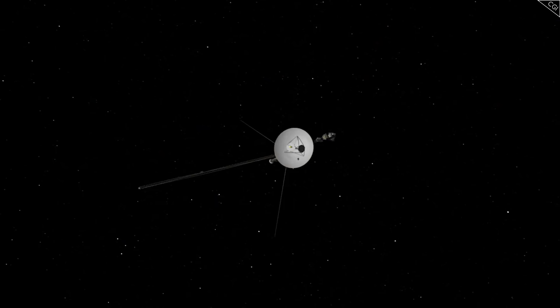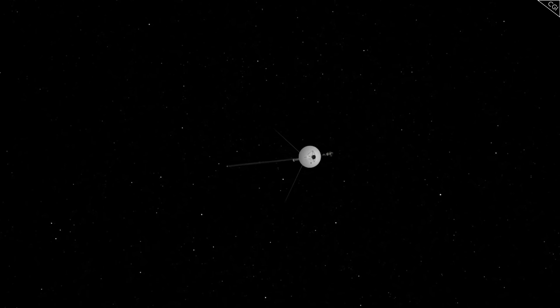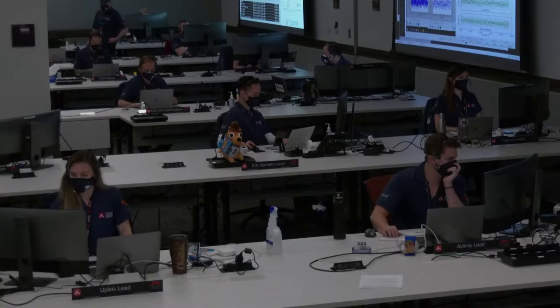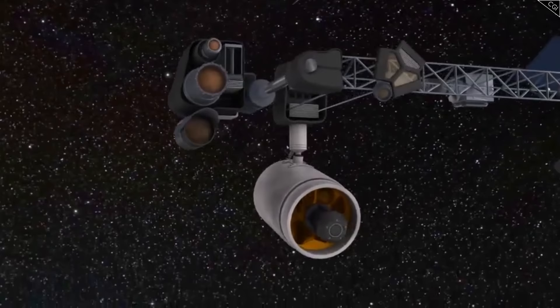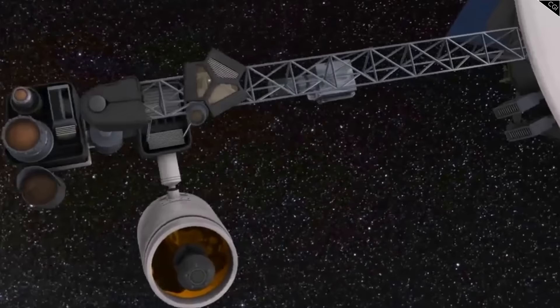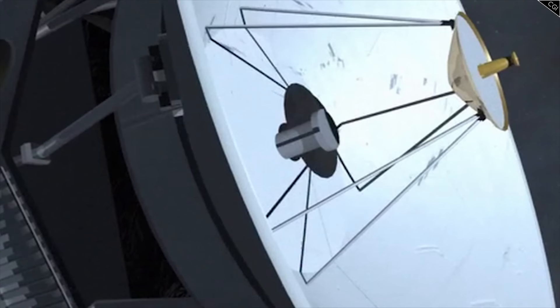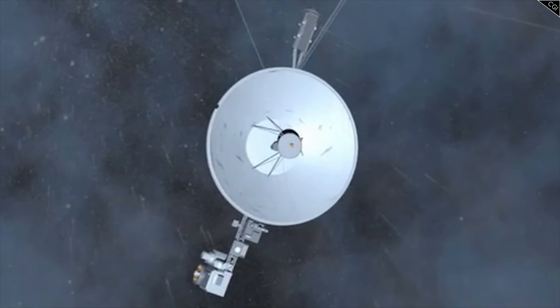To further compound the strangeness, Voyager 1 doesn't think that anything is wrong with it at all. The spacecraft comes equipped with emergency safe mode settings that it can go into if it detects that anything is not working the way it ought to be. Essentially, these involve powering down until scientists can figure out what's wrong with it. And these have not activated.